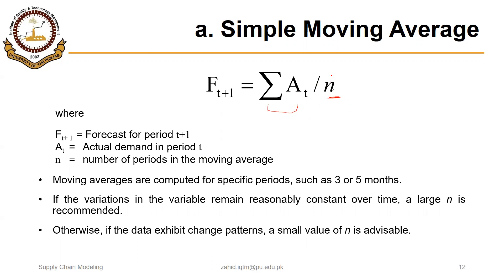The main question that arises is: what should be the value of n? A simple rule of thumb is that if the variation in the variable remains reasonably constant over time, a larger n is recommended. Otherwise, if the data exhibits a change pattern, a small value of n is advisable. So for stable data with no significant variations, larger n is recommended, and for random or unpredictable changes, smaller n is advisable.